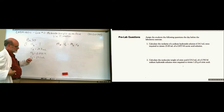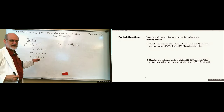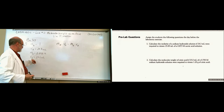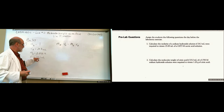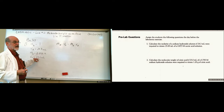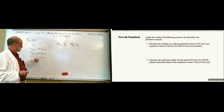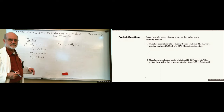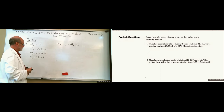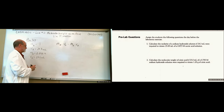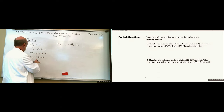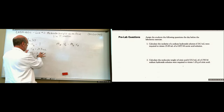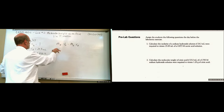Volumetric pipettes come in different volumes — ones, twos, threes, fives, tens, twenty-fives, fifties, and hundreds. So they're pretty handy. Now we've got that information and we can use the formula.